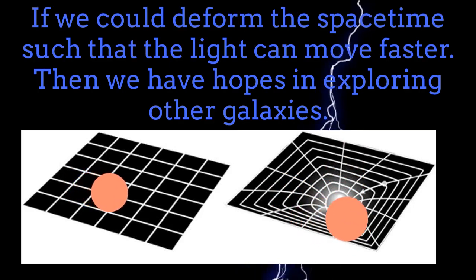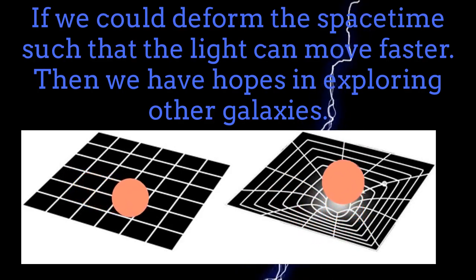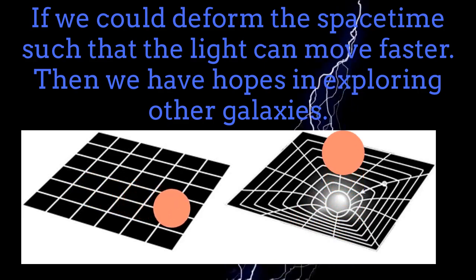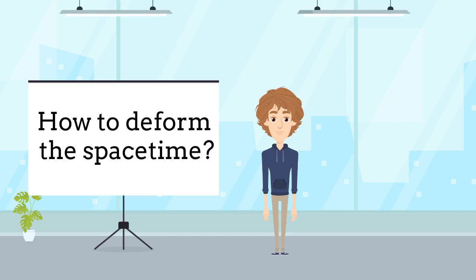On the left figure, the light is moving over a flat space-time. On the right figure, the space-time has been deformed, changing then the effective speed of light with respect to the vacuum. But how to deform the space-time appropriately?